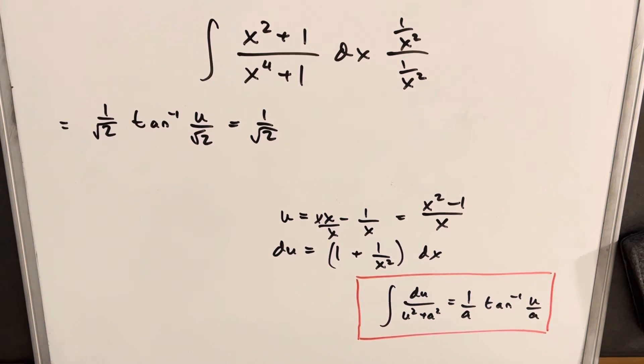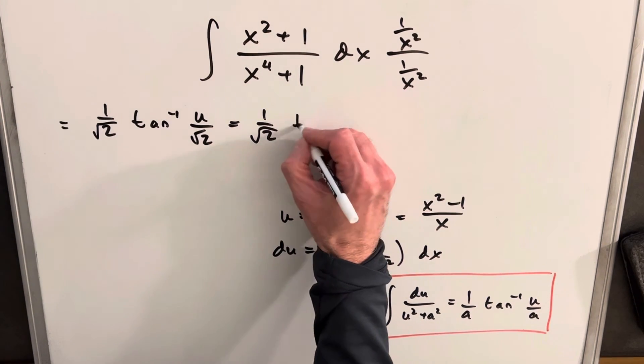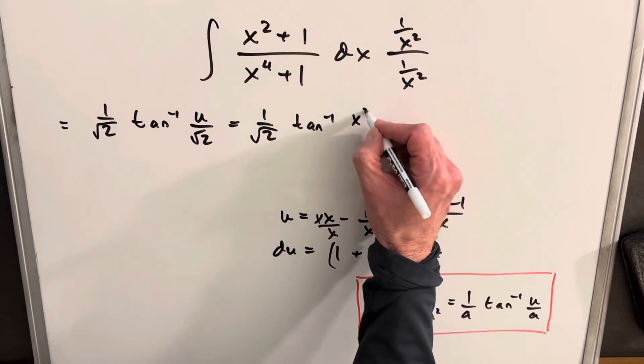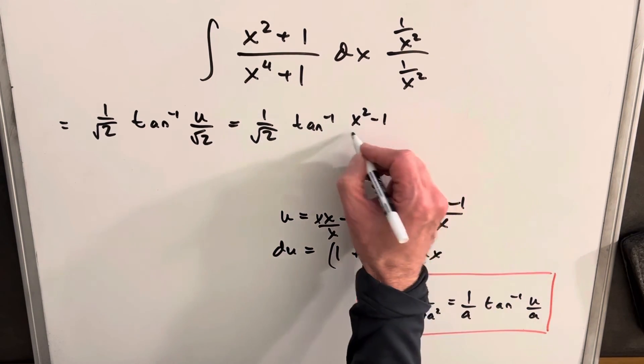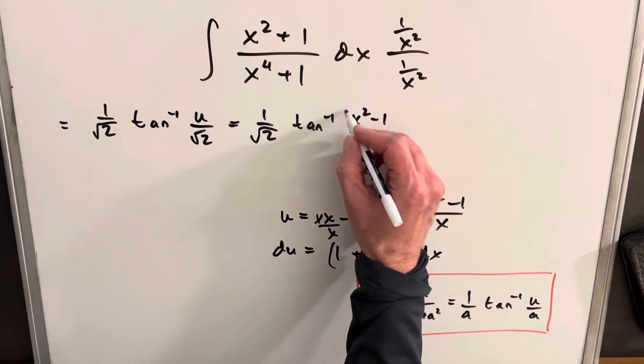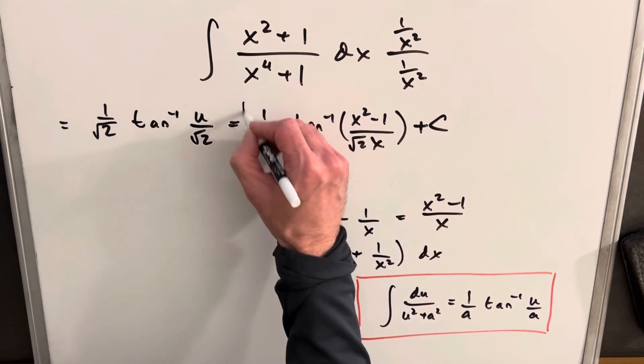Oh, and this is a square root of 2 here, sorry about that. So we're going to have 1 over square root of 2, arctan of x squared minus 1 over x, but we're going to have this square root of 2 that we don't want to forget, plus c, and we're done.